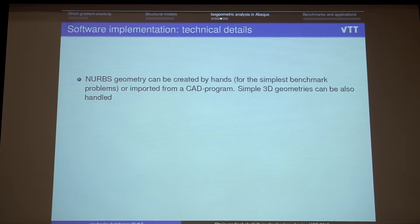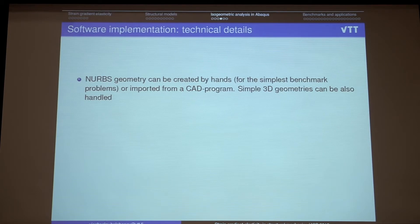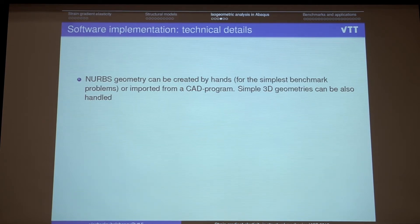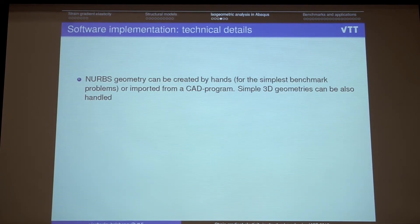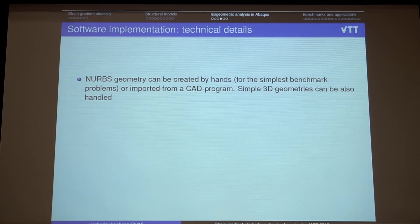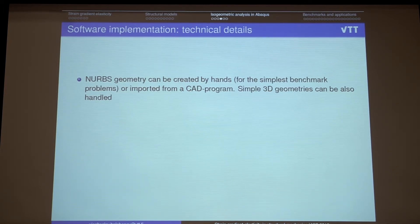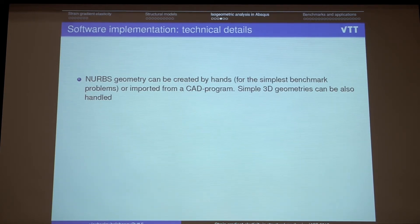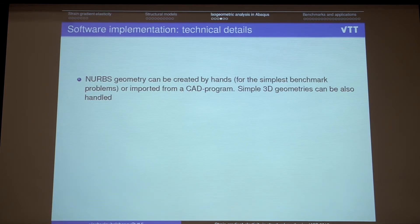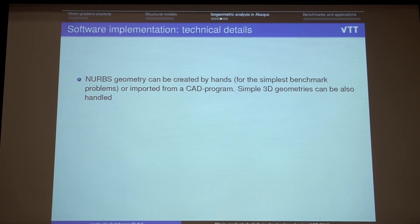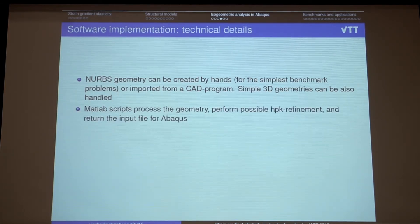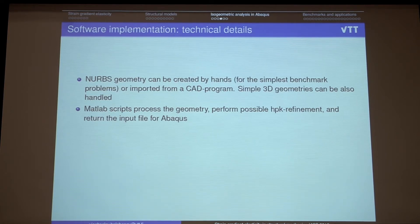So just a couple of technical details. I'm not going deep to the details. But there are a lot of programming stuff behind this. And so the fact that we can use any... By using our subroutines, by using our soft, homemade soft, so we can use... Take any NURBS geometry directly from the CAD file. And after being processed by some scripts, it creates the input file for Abacus. Which we can use further for calculations.